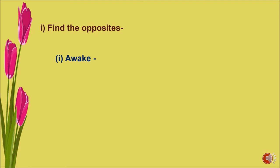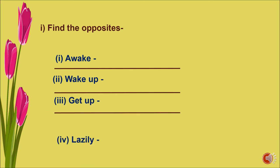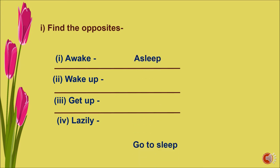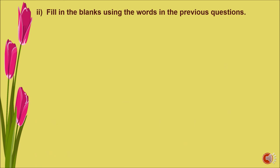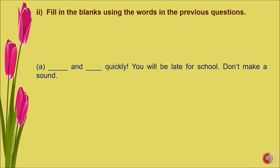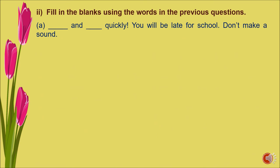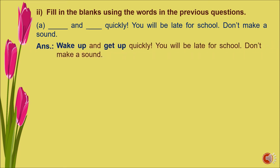Observe the highlighted words: always, wake up, lazily, get up, lie down, quickly. On the basis of the paragraph, find the opposites: awake, wake up, get up, fall asleep, and lazily/quickly — these are opposite words. Question two: fill in the blanks using the opposite words. Sentence A: dash and dash quickly — you will be late for school. The answer is wake up and get up.